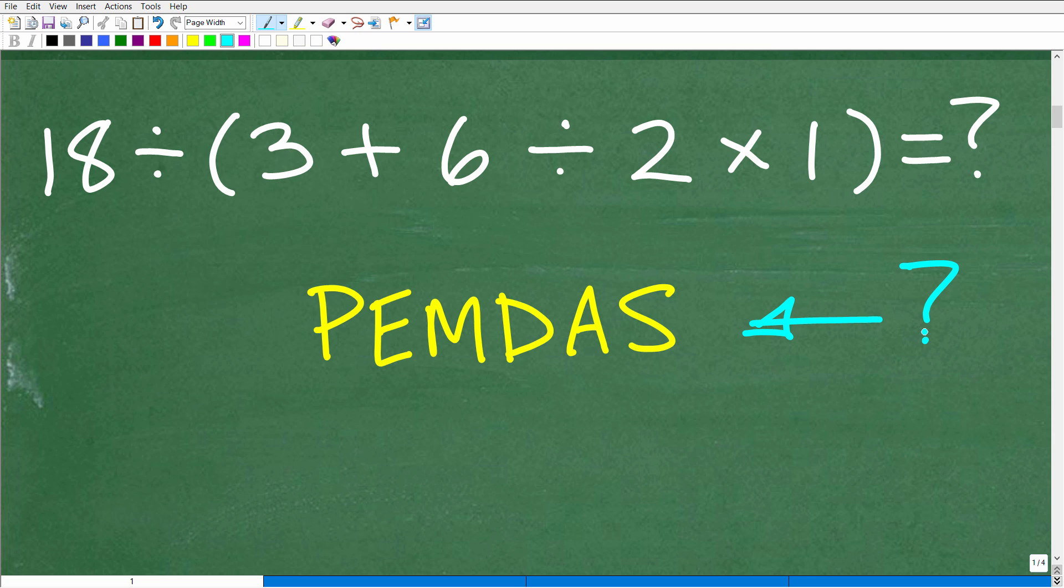Now, what does this all mean? PEMDAS is a checklist. This is how you're going to think about math problems when there's different operations, and you're going to go from left to right. We're going to look at these letters one step at a time from left to right. P stands for parentheses, but it could be brackets or these other kind of squiggly brackets. Really, these are what we call grouping symbols. If there's multiple parentheses in your problem, you'll always work from the innermost out.